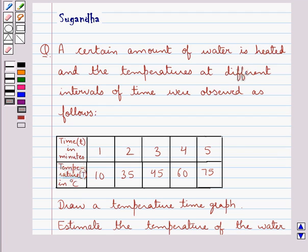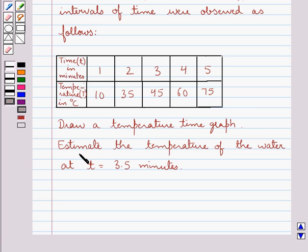Hello and welcome to the session. In this session we discuss the following question: a certain amount of water is heated and the temperatures at different intervals of time were observed as follows. Draw a temperature-time graph. Estimate the temperature of the water at T equal to 3.5 minutes.